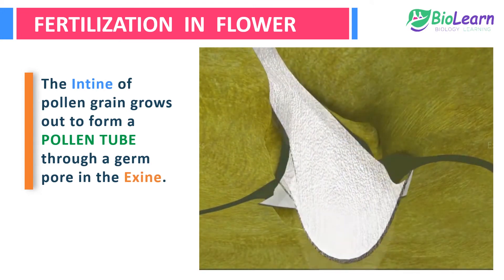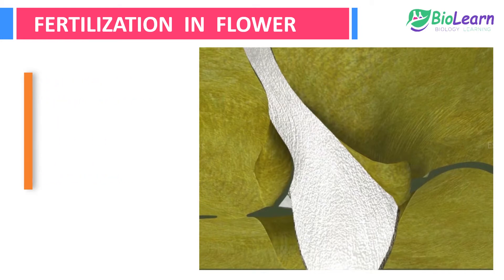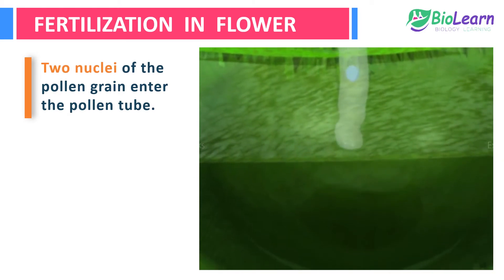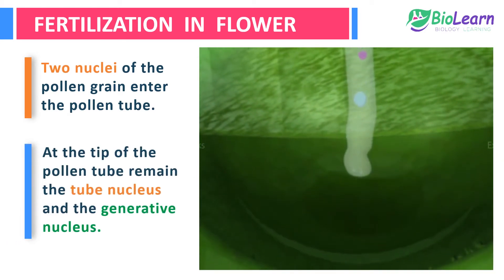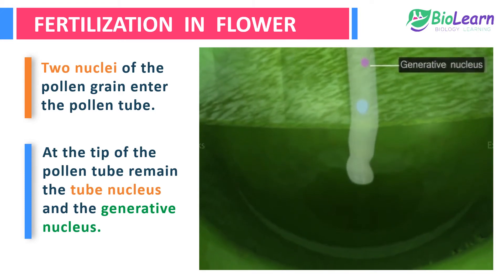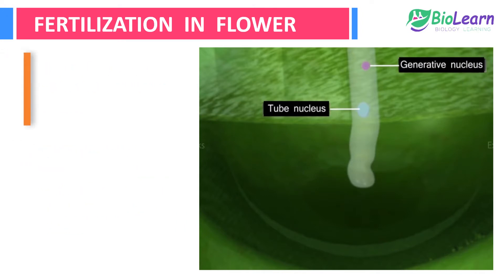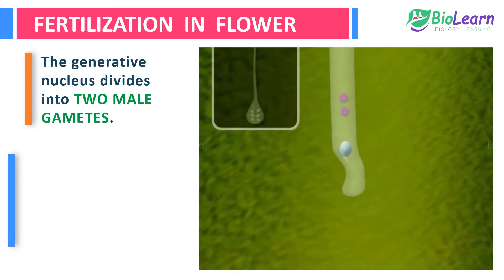Through a germ pore in the exine, the intine of the pollen grain grows out to form a pollen tube. The two nuclei present in the pollen grain enter the pollen tube. At the tip of the pollen tube remains the tube nucleus, followed by the generative nucleus. The generative nucleus then divides into two sperm nuclei, which are also called the male gametes.